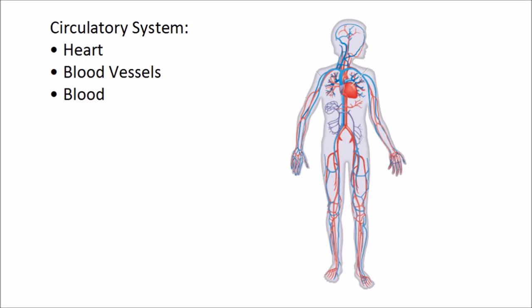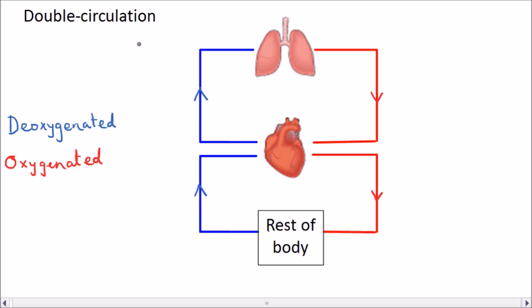The circulatory system consists of the heart, the blood vessels, and the blood. In this video we're going to be concentrating on the heart. We and all other warm-blooded organisms have what's called a double circulation system, where blood circulates between the heart and lungs and also between the heart and the rest of the body.